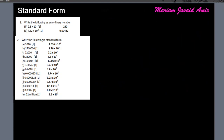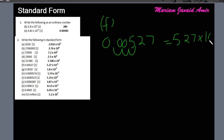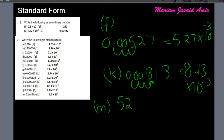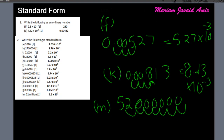For part F, 0.00527: we move the decimal three places to the right, so this becomes 5.27 × 10⁻³, not +3, because we're moving the decimal to the right. Similarly, part K, 0.00813: move decimal three places to the right, giving 8.13 × 10⁻³. Then part M, 52 million: million has six zeros, so moving the decimal seven places gives 5.2 × 10⁷.